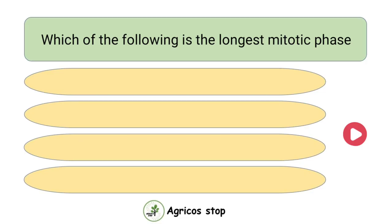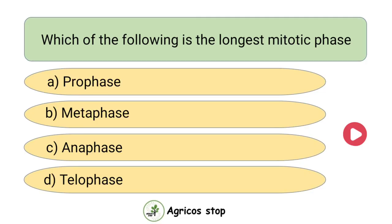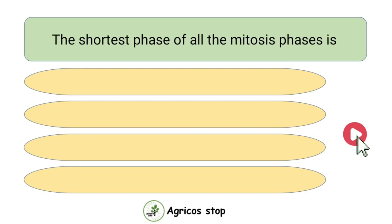Which of the following is the largest mitotic phase? Options are Prophase, Metaphase, Anaphase, and Telophase. The answer is Prophase. Prophase is the largest mitotic phase.